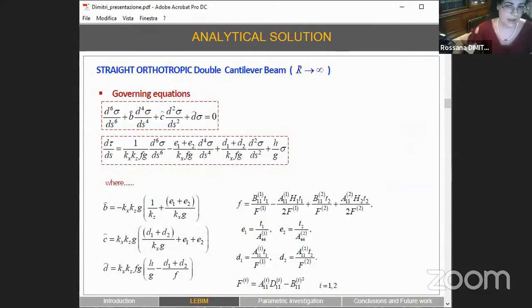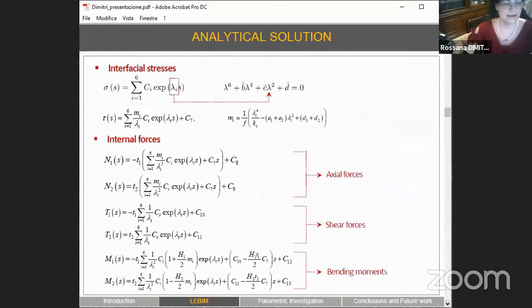Here we provide just a closed form solution for a simple case - a straight orthotropic double cantilever beam when the radius of curvature tends to infinite. In this case we have to apply a suitable change of variables where the interfacial stresses are selected as prime unknowns. After a long mathematical manipulation, we have the following set of relations which are uncoupled and easily to be solved. After integration we can obtain the closed form solution for the interfacial stresses.